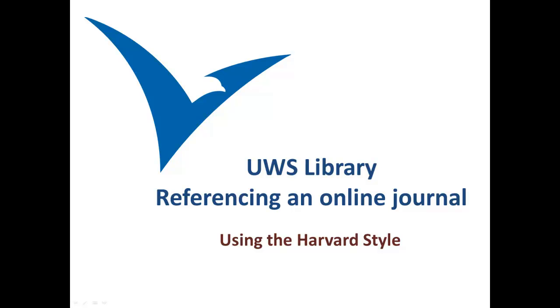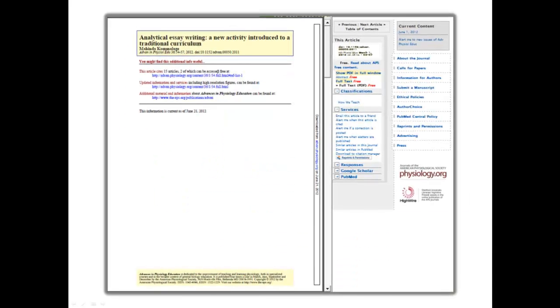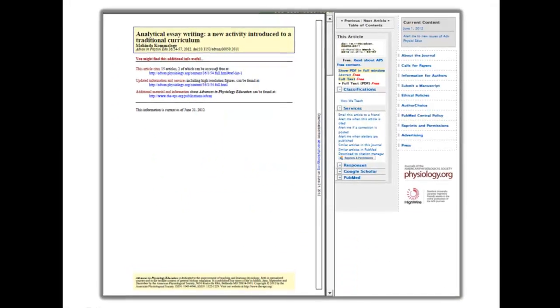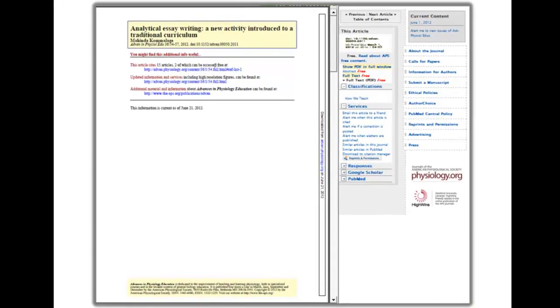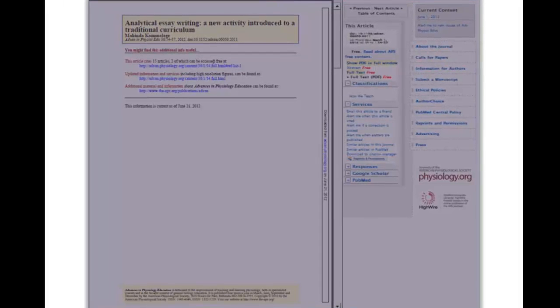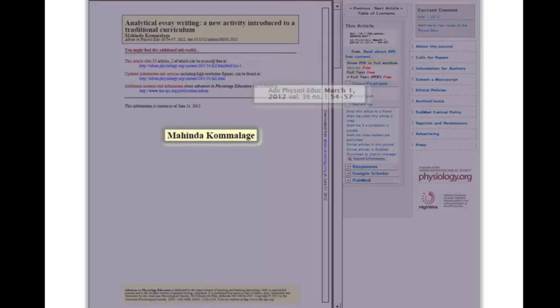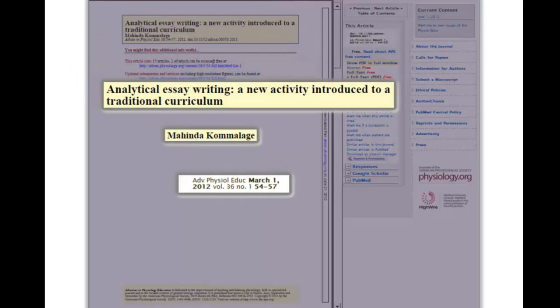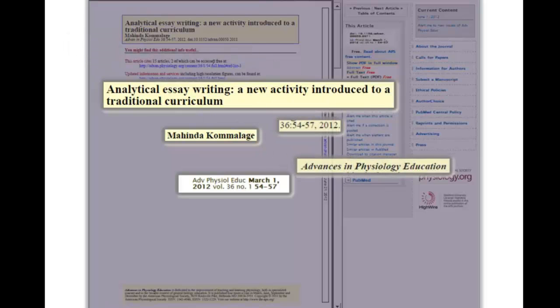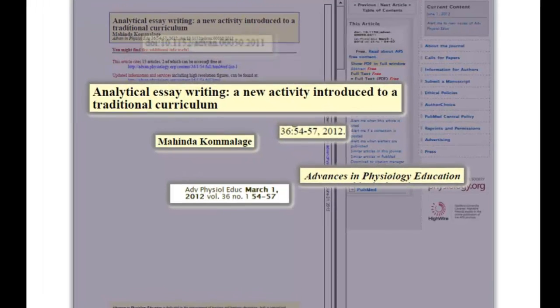This guide will show you how to reference a journal article using the Harvard style. The details for citing a journal article are generally found on the page where you access the article. Important details include the author of the article, year it was published, title of the article, volume and issue numbers, and the page range.